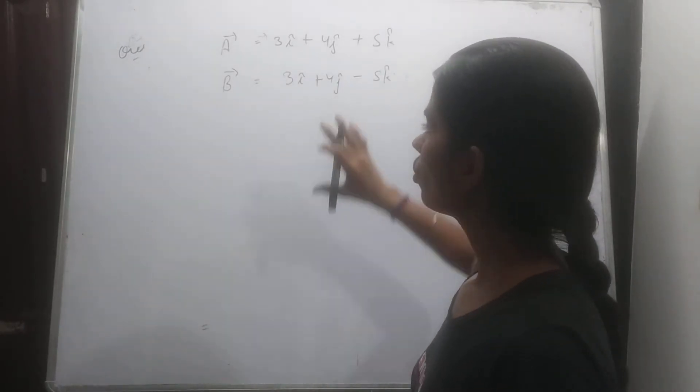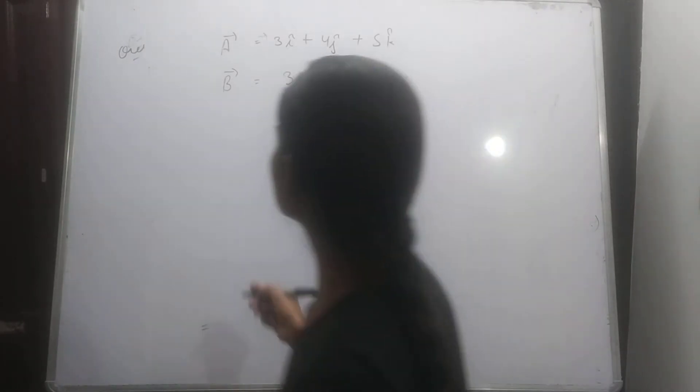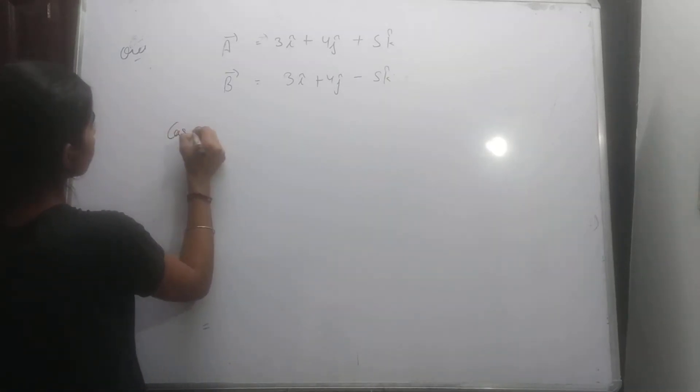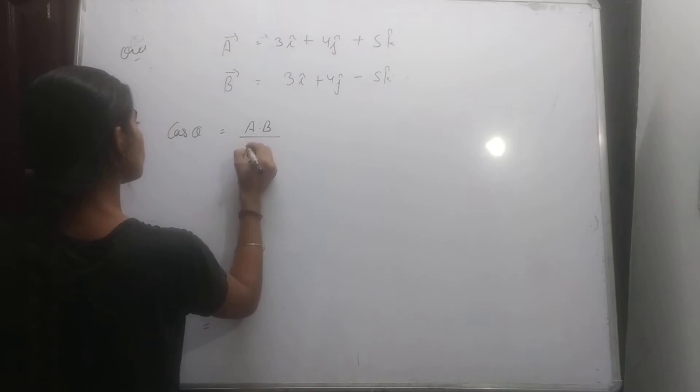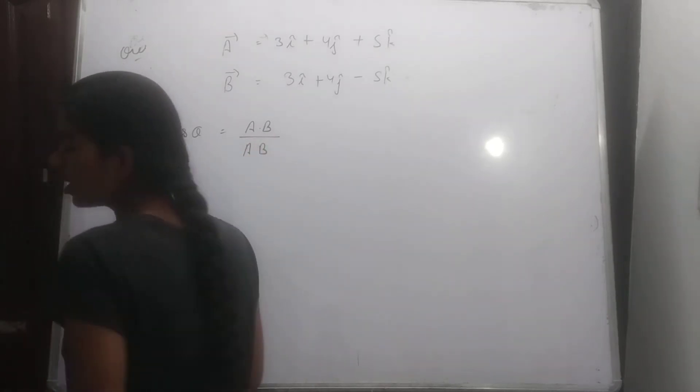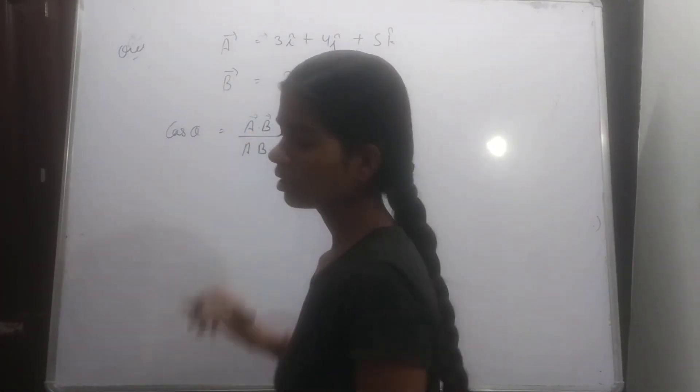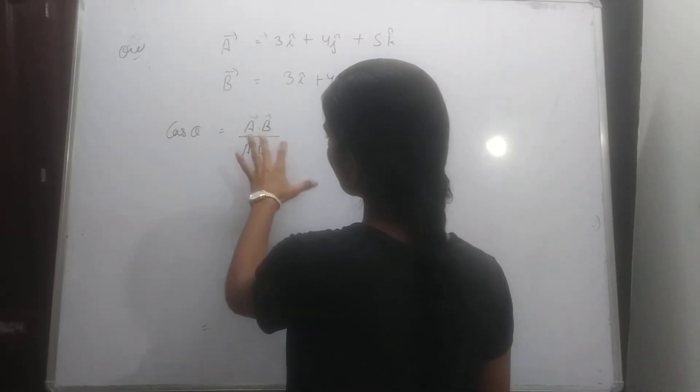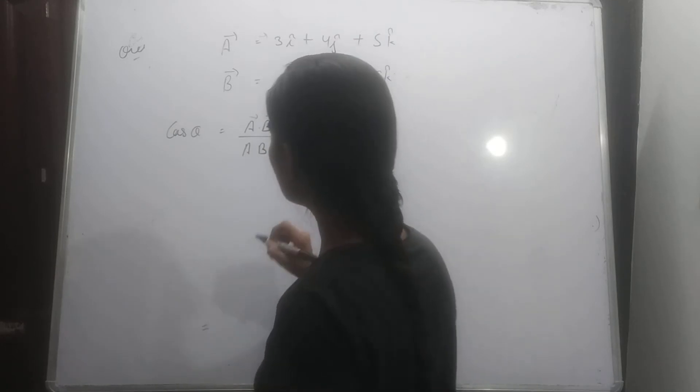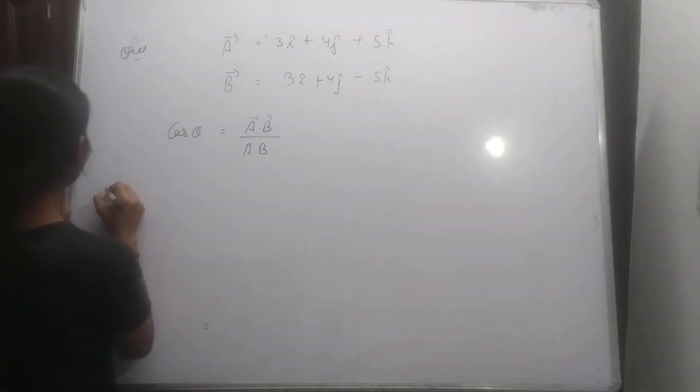Ki kitna hooga angle between them, two vectors, a and b. To hume de rakha, cos theta equal to kya hooga, a dot b divide by a b. That is the cos theta. Cos dot product mein, theta nikale ke liye kya hooga, a dot b divide by a b. Yeh do method hoongi, isme method number one.